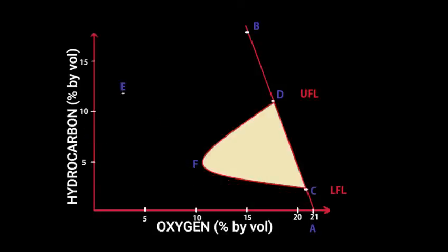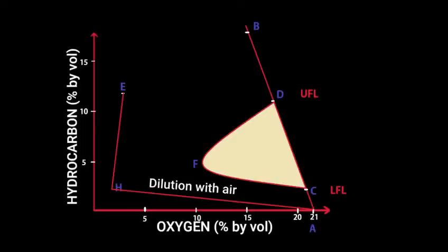Therefore, it is advised to purge if the mixture reaches a point H. From H, if the mixture is diluted with air of 21% oxygen, it will follow the line HA which does not pass through the flammable range. Hence, the safe condition is maintained throughout the process.